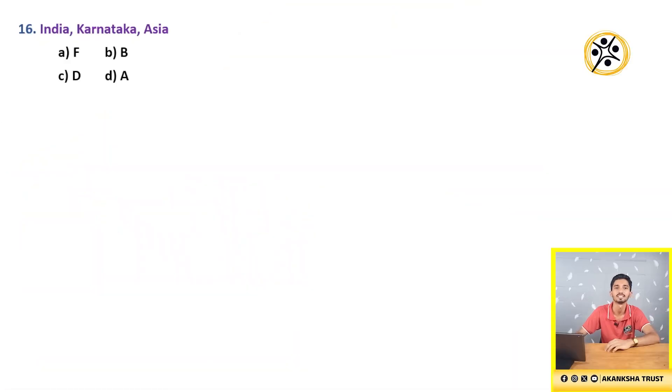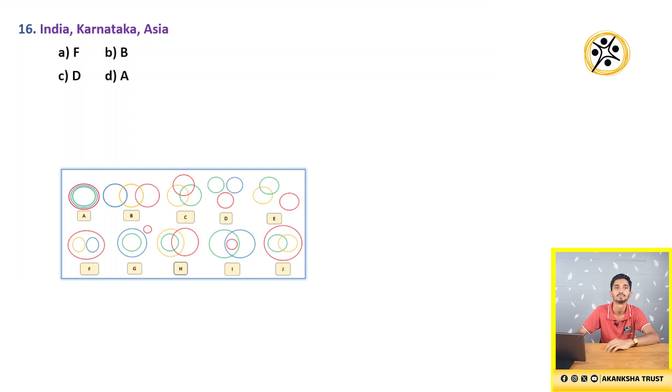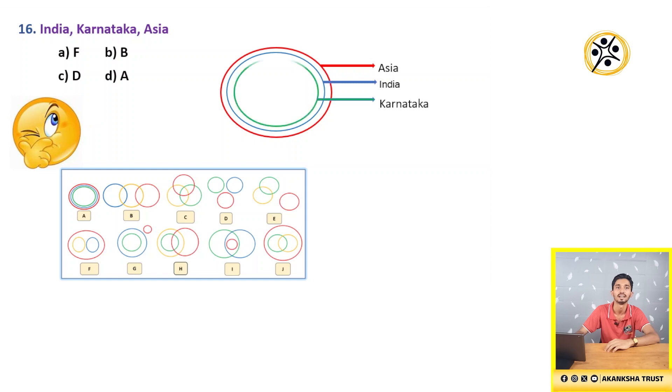16th question: India, Karnataka, Asia. First circle represents Asia. Inside Asia, we are having India. Asia is a continent, India is a country which is present within Asia continent. And Karnataka is a state which is present within India country and Asia continent. This figure holds good with option D, i.e. A.